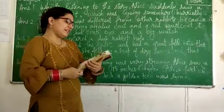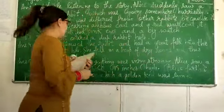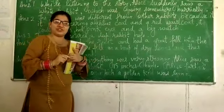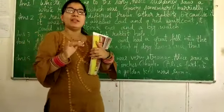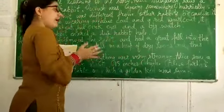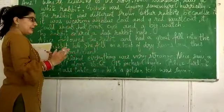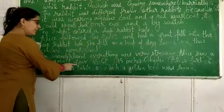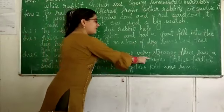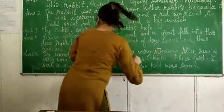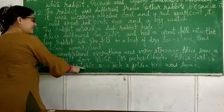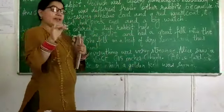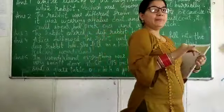Next question: what strange things did Alice see there? Yes, in Wonderland everything was very strange. Alice saw a very small door about 15 inches high. Alice further saw a glass table on which a golden key was lying.